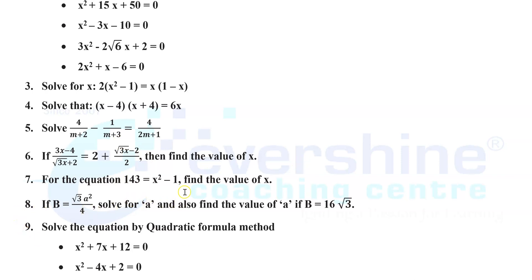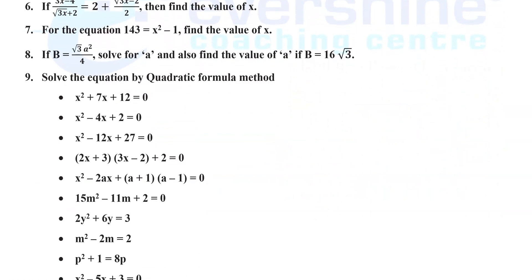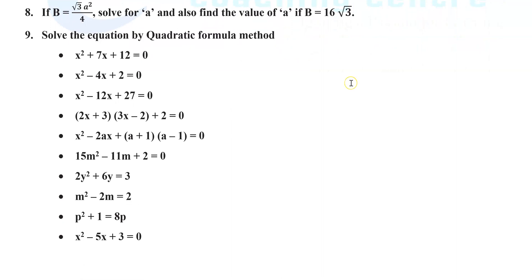Next, for the equation 143 = x² − 1, find the value of x. Similarly, if b = √3 · a²/4, solve for a and find the value of a when b = 16√3. Then solve the equations by the quadratic formula method. We have given a number of questions with all varieties regarding the formula method. The method and formula are the same, but in some questions the starting approach — how you convert to standard form — is different, and the calculation also differs.